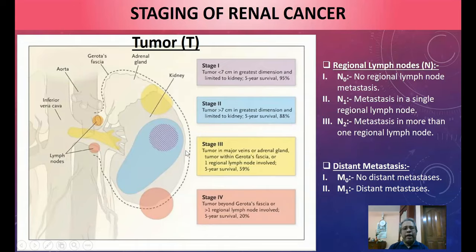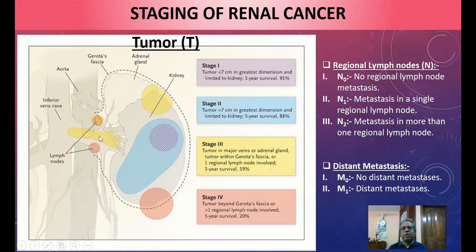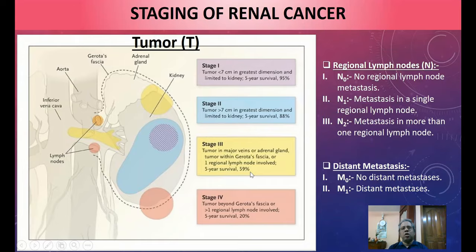In Stage III, the tumor enters major veins or invades the adrenal gland — since the renal capsule is densely adherent superiorly, the adrenal gland sits posteriorly. Tumor within the major veins, renal veins, adrenal glands, or within Gerota's fascia, or with regional lymph node involvement — five-year survival declines to 59%. Increasing size and peripheral tissue involvement worsens prognosis.